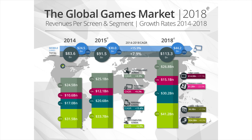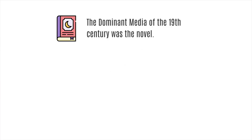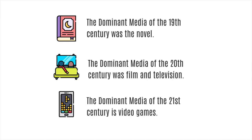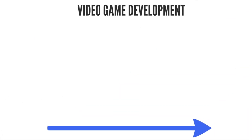Historically, it's important to think about games and where they sit in relation to other media. The dominant media of the 19th century was clearly the novel, the written word. The dominant media of the 20th century started as radio, then film and television. Predicting ahead, the dominant media of the 21st century is going to be video games — an observation drawn from Dyson and Sauccia's History of Video Games in 64 Objects. Let's think about how games get made and how the industry has transformed over the last two decades.